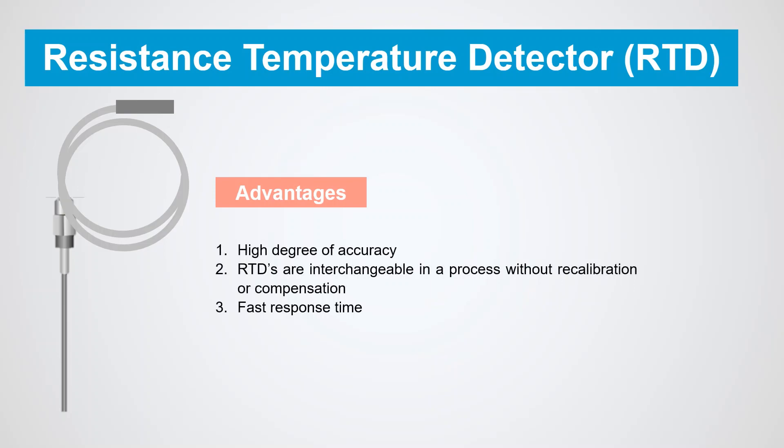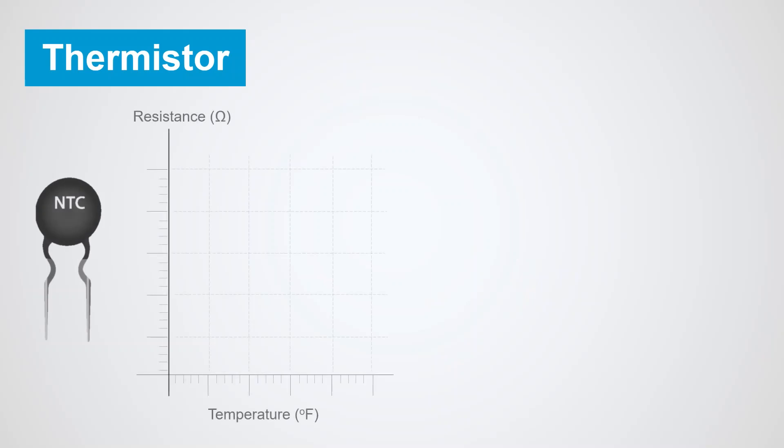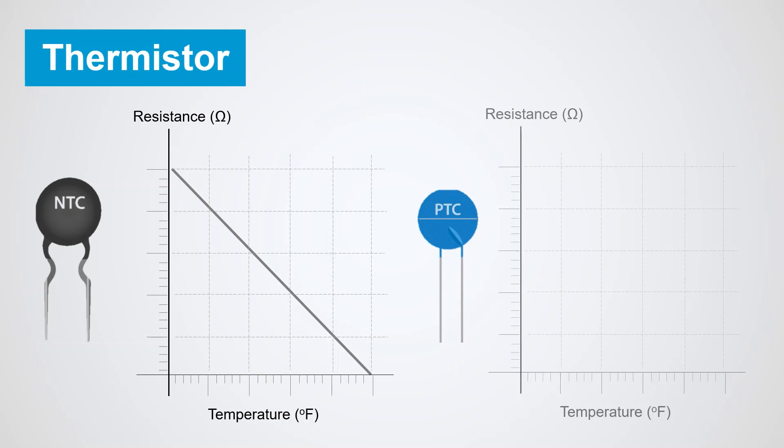Thermistors are temperature-sensitive variable resistors made of ceramic-like semiconducting materials such as metal oxides, cobalt, copper, nickel, and are widely used in industrial purposes for overcurrent protection, self-regulating heating elements, inrush current limiters. Thermistors can be NTC or PTC. In NTC, negative temperature coefficient thermistors, resistance decreases as temperature rises. NTCs are commonly used as inrush current limiters.